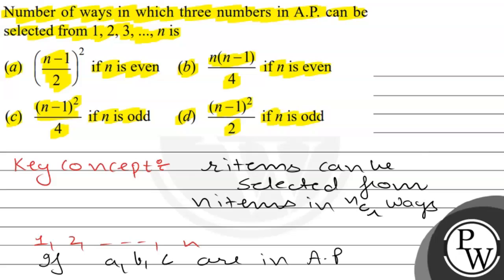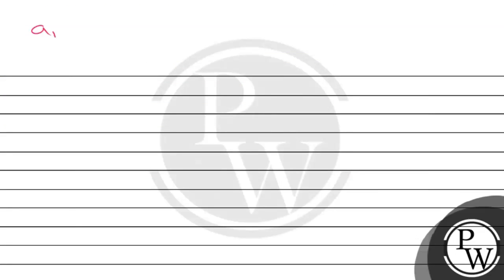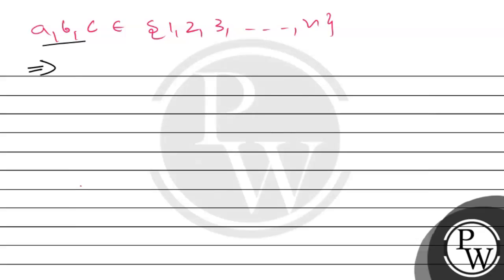We have A, B, C which belong to 1, 2, 3, and so on. A, B, C are natural numbers. We consider A and C, where A and C are both of the same parity.